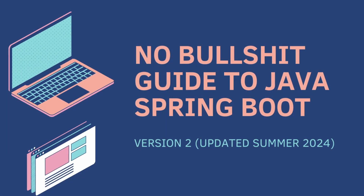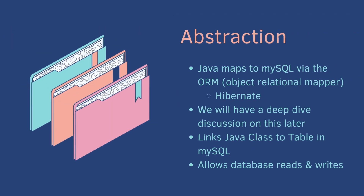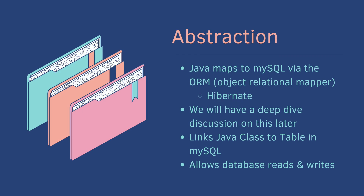Welcome back to video 2 of the No Bullshit Guide to Java Spring Boot. Today we are going to directly interface with the database. We're going to create a new product table in MySQL and a new product class in Java. Java maps to MySQL via the ORM, or Object Relational Mapper. The default ORM in Spring Boot is Hibernate, which is what we'll be using. It links a Java class to a table in MySQL and allows database reads and writes.